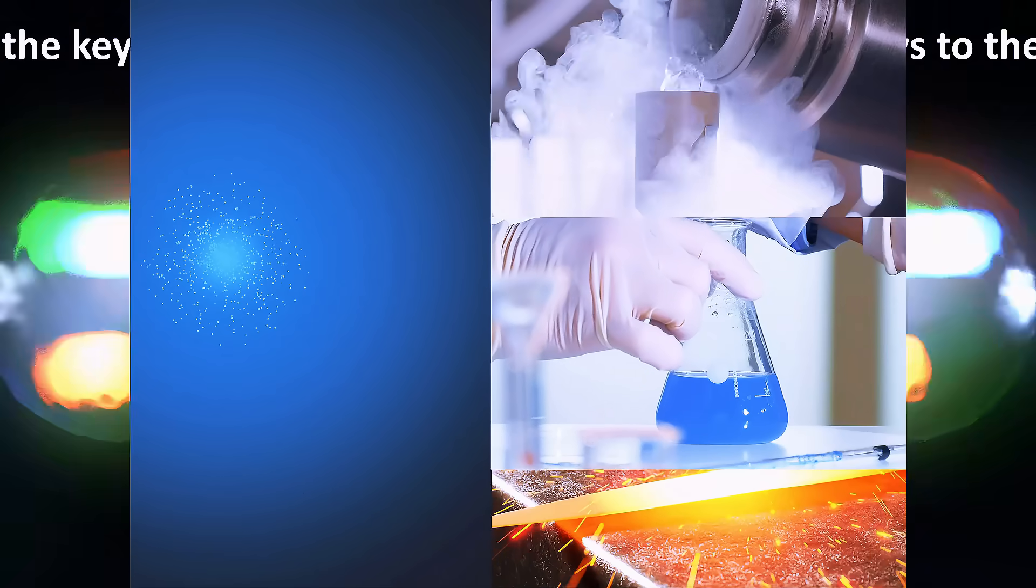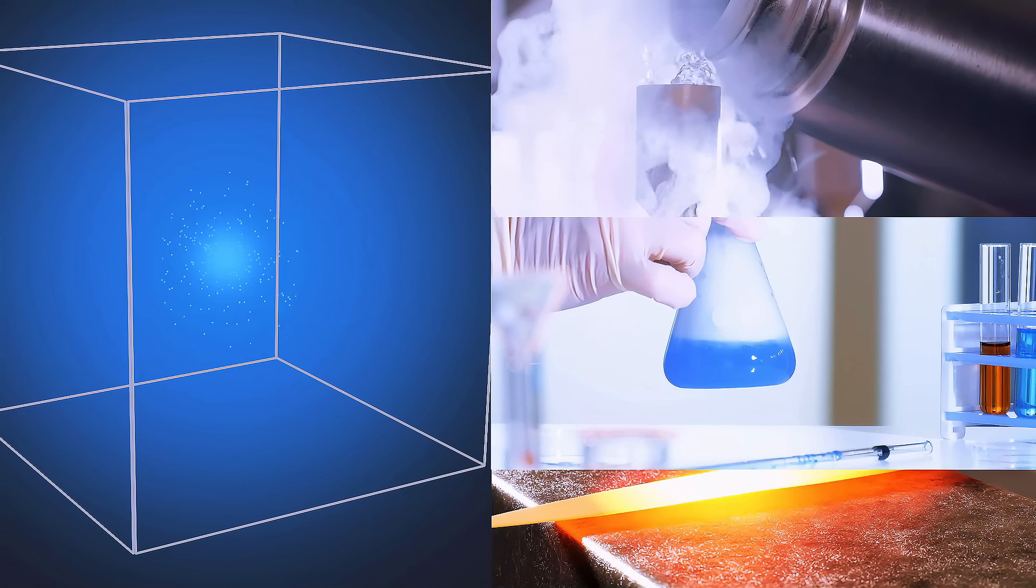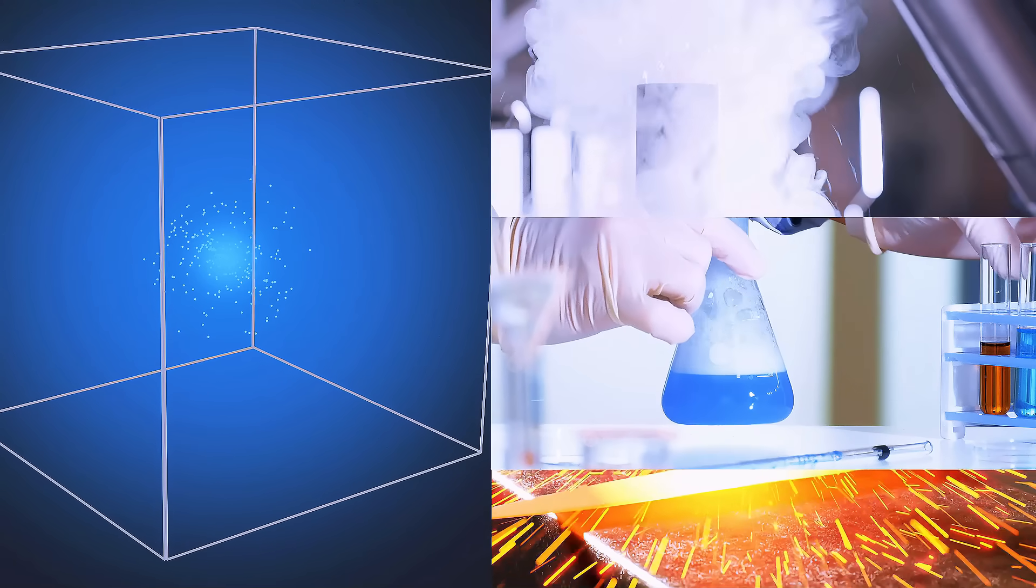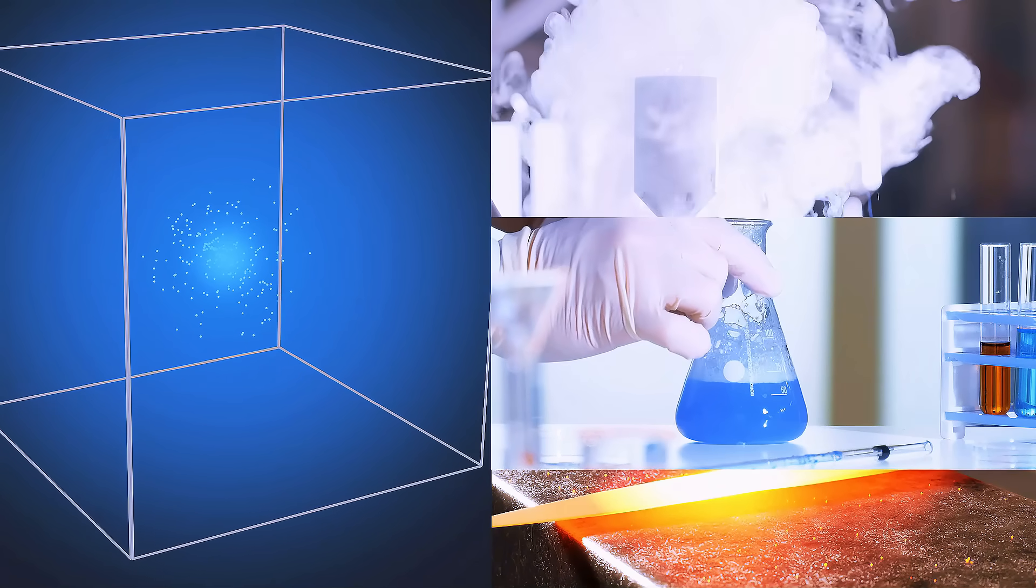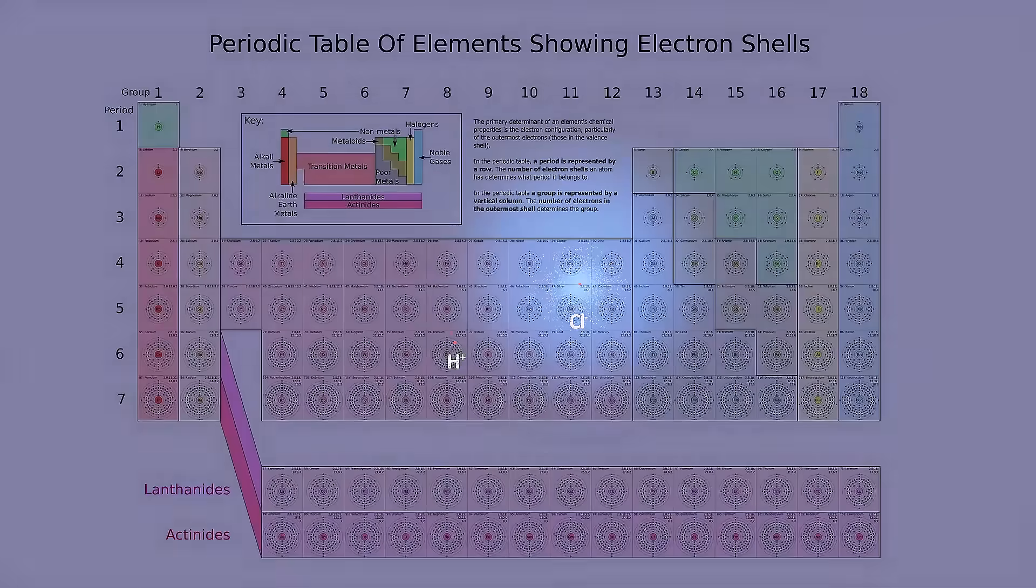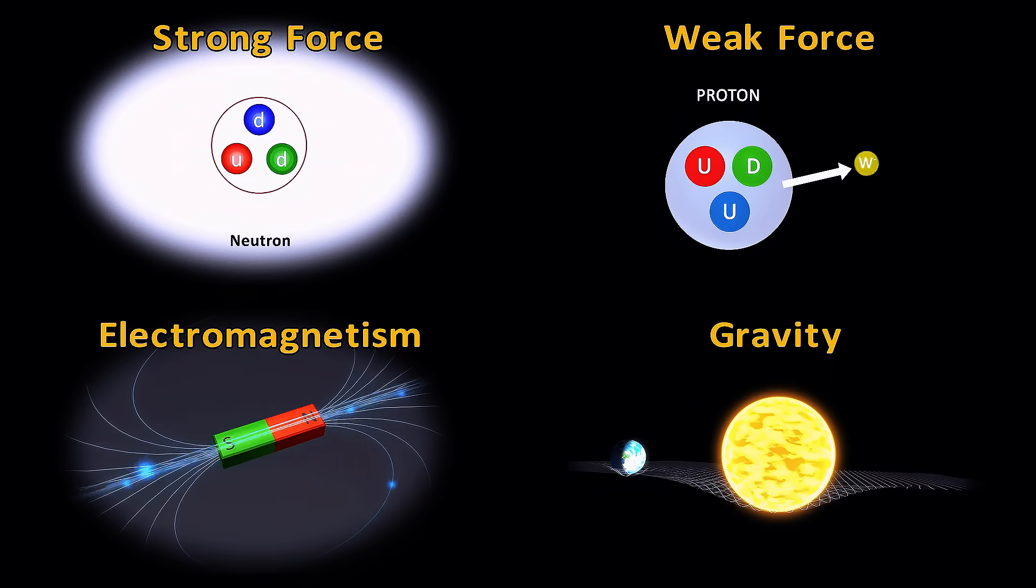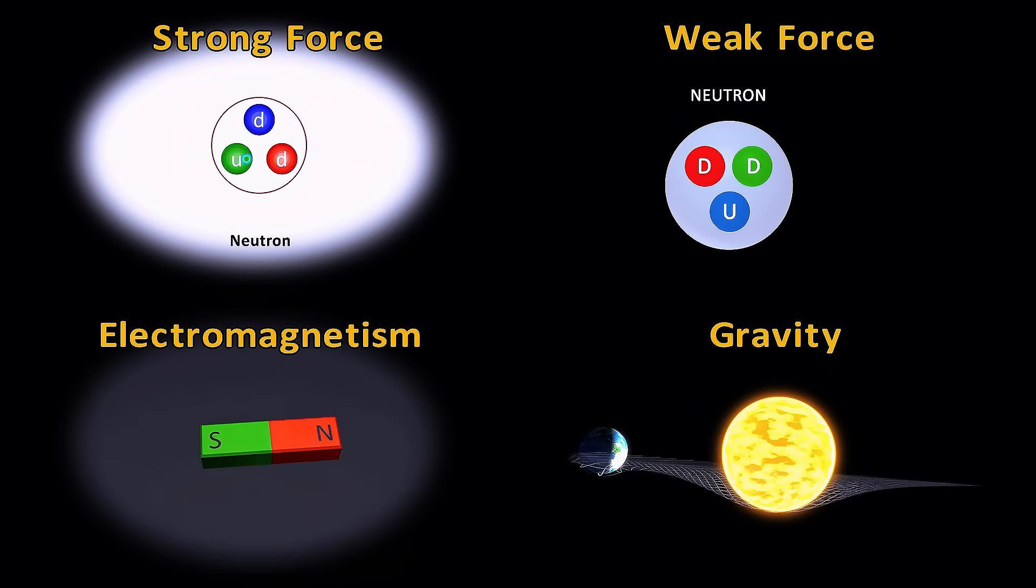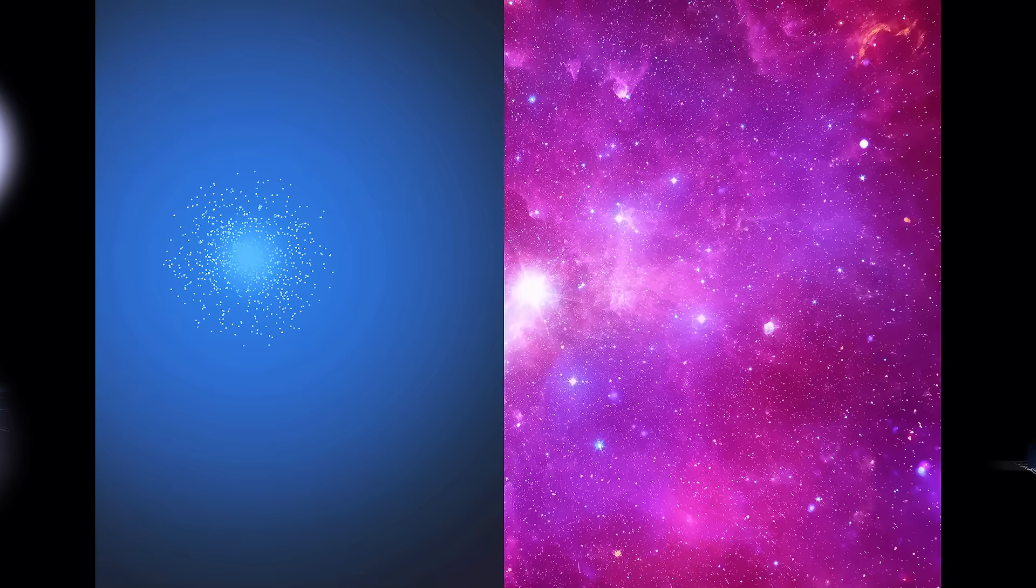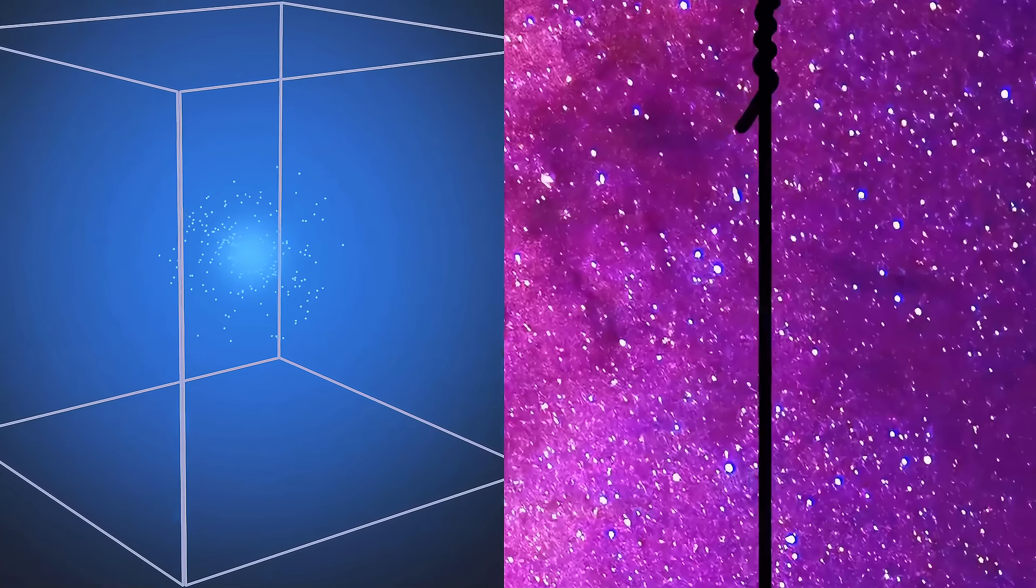And yet this tiny structure holds the keys to understanding the entire universe. An atom is the smallest unit of matter that still retains the properties we see in the macroscopic world, like the chemical and physical characteristics of substances. But it's also a quantum entity with discrete energy levels and unique interaction properties. And here's the kicker. This humble atom interacts with all four fundamental forces of nature.